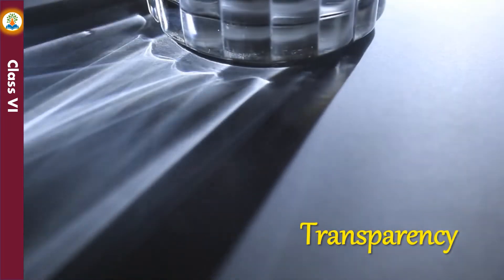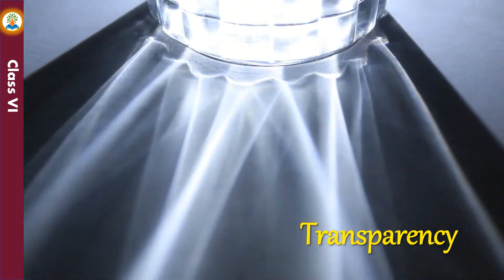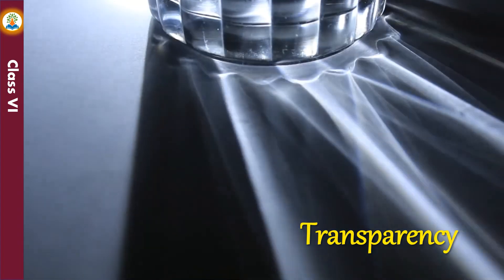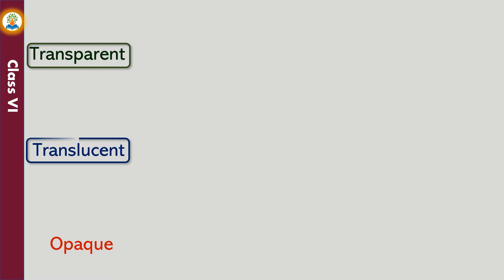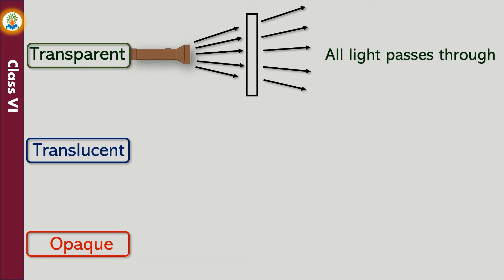Some materials allow light to pass through them whereas others do not. On the basis of amount of light that a material allows to pass through, materials can be divided into three groups: transparent materials, translucent materials, and opaque materials.